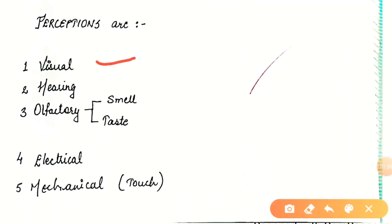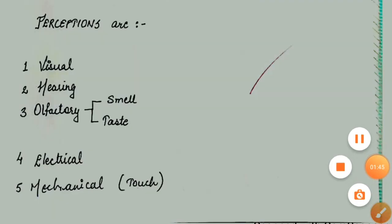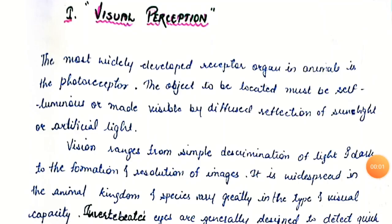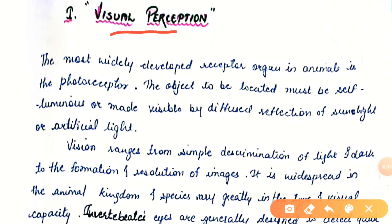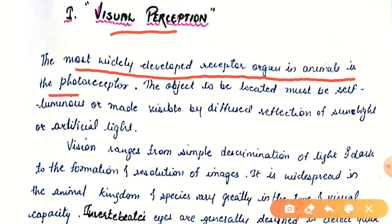Types of perceptions are: visual, hearing, olfactory (which includes smell and taste), electrical, and mechanical (which is touch). Visual perception is very important — the most widely developed receptor organ in animals is the photoreceptor, which helps in vision. So photoreceptors are something which help in vision.